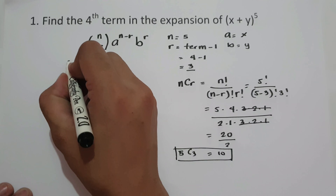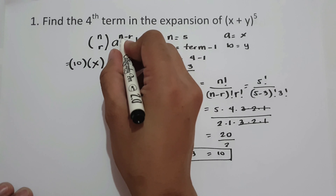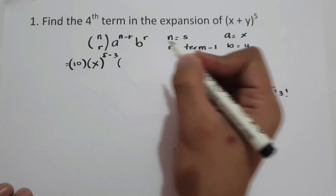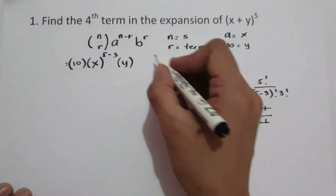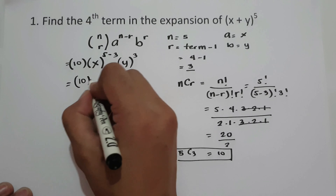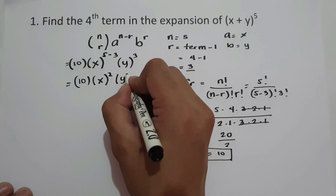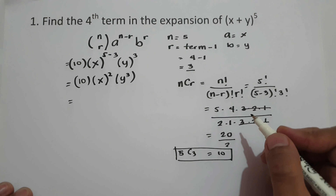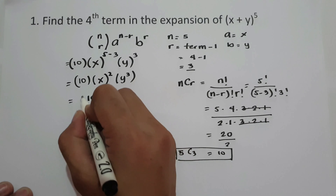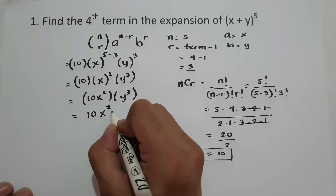So n taken r is 10. Then the first term is x, n is 5 minus r is 3, times b which is y, raised to r which is 3. To simplify, we have 10 times x raised to 5 minus 3, that is 2, then y cubed. So the answer is 10 times x squared times y cubed. The final answer is 10x squared y cubed.